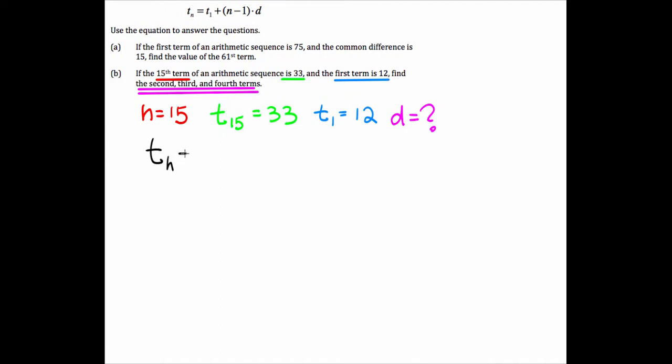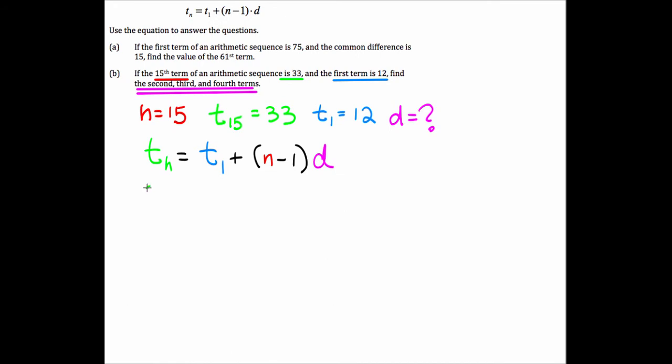Here's the overall formula. T sub n equals T sub 1 plus n minus 1 times d. Let's fill in each of the pieces that we know. In green, T sub 15, that's 33.